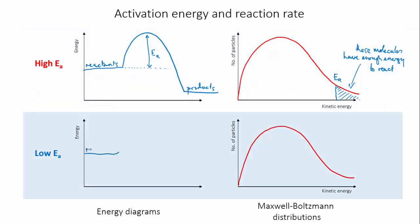But now, consider mixing in the second flask, this same reactant, with something that will cause a different chemical reaction, one that has a low activation energy. The energy diagram for this reaction looks like this, and the activation energy would be somewhere here on the Maxwell-Boltzmann diagram.